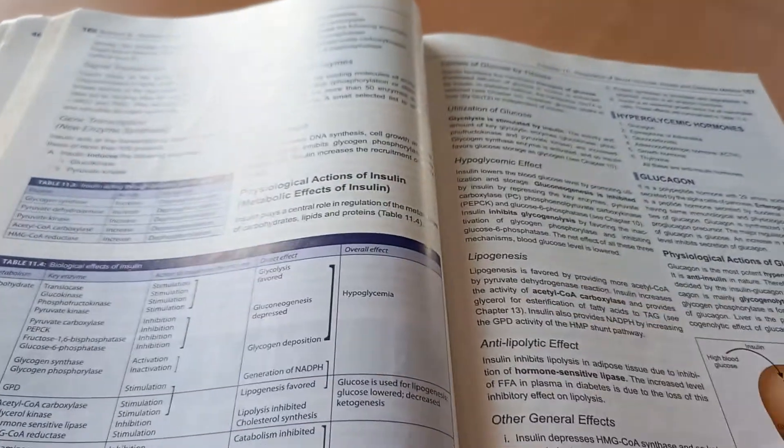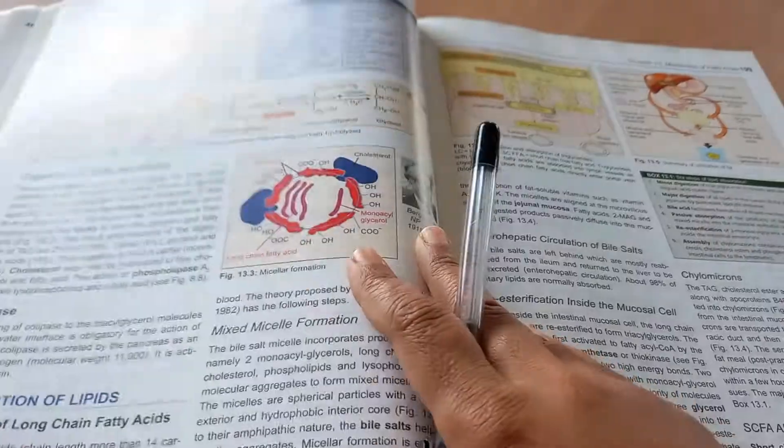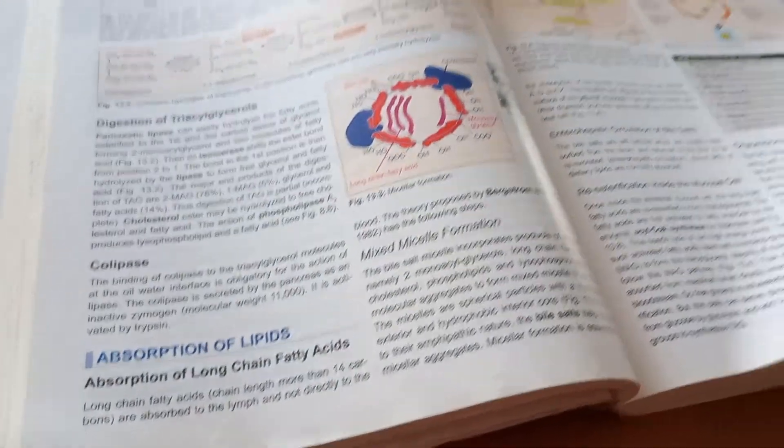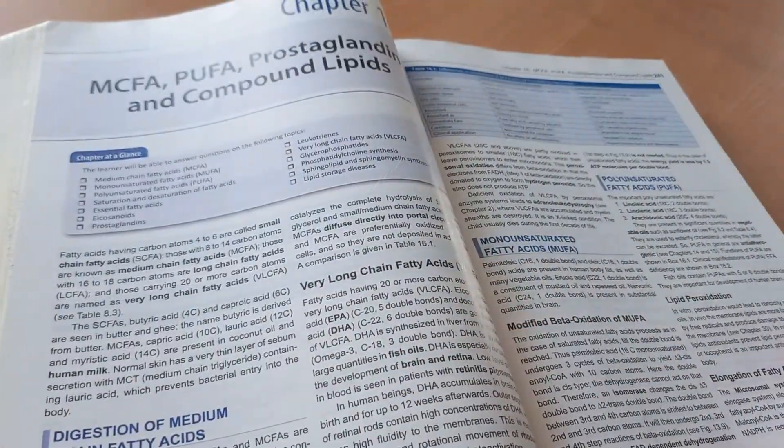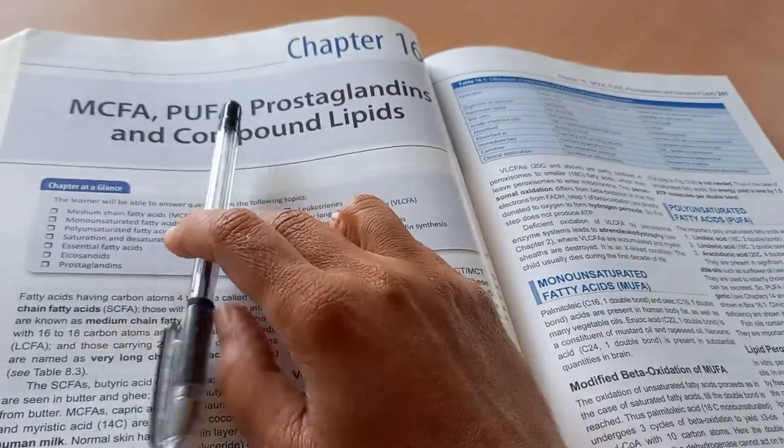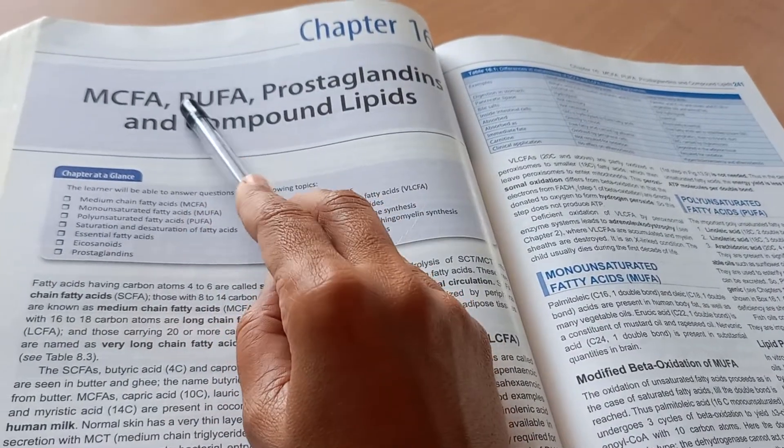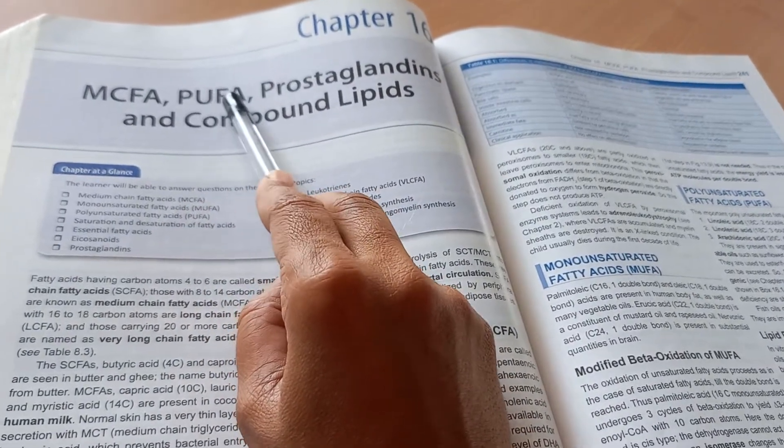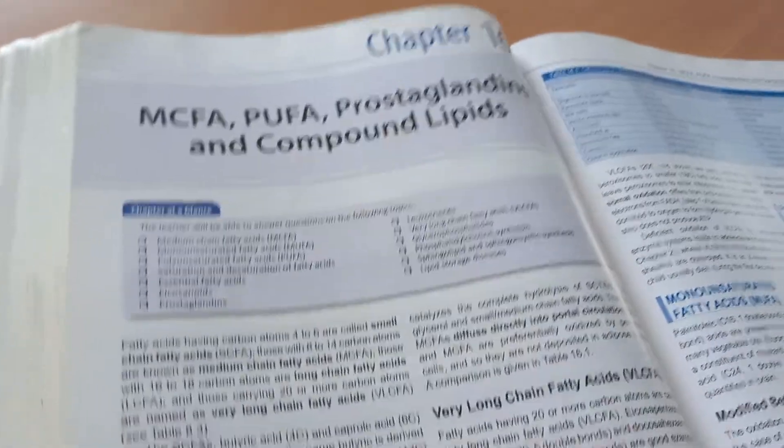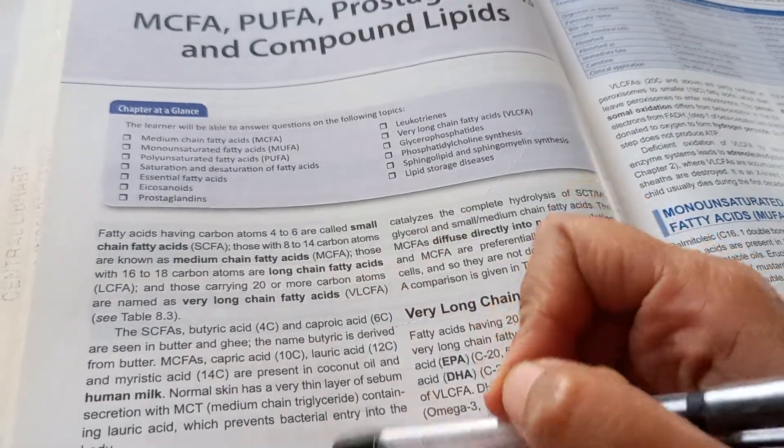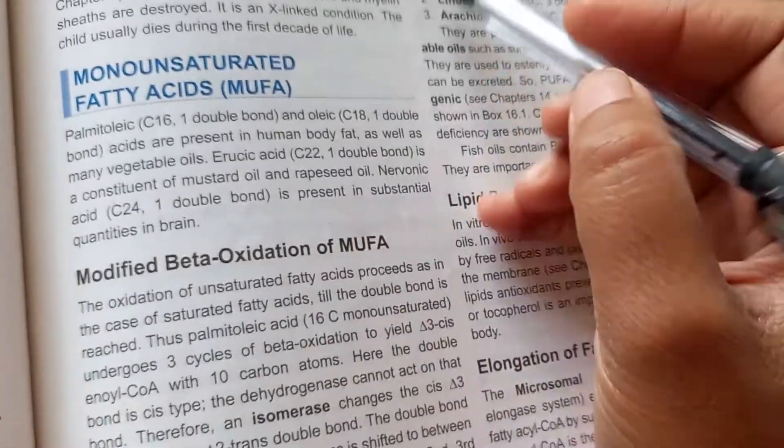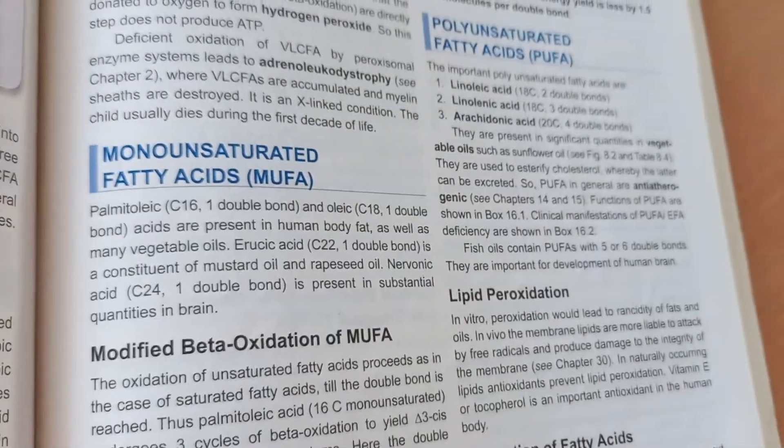So what else are we looking at in this book? Metabolism of carbohydrates, fats, proteins - all that you should know because this is chemistry. And lipids. What is MCFA? PUFA - polyunsaturated fatty acid. What is PUFA? Polyunsaturated fatty acids. If I'm not wrong, these PUFAs are kind of good.